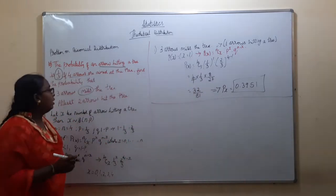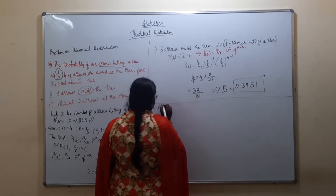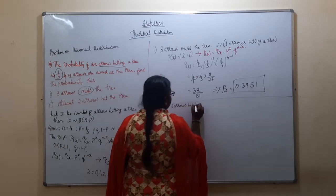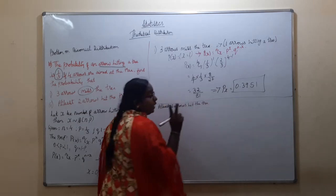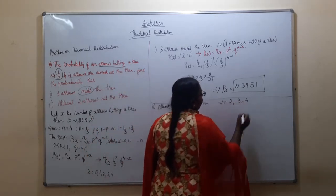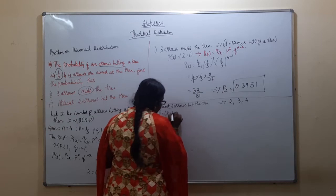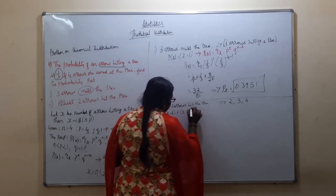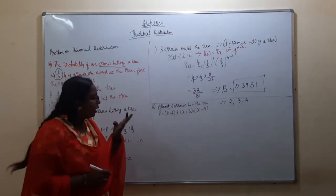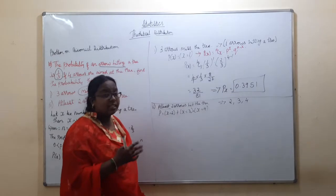Next part: at least 2 arrows hitting the tree. When 'at least' is used, my chances will be x = 2, 3, or 4. So P(x ≥ 2) = P(x=2) + P(x=3) + P(x=4). I am getting 3 terms.